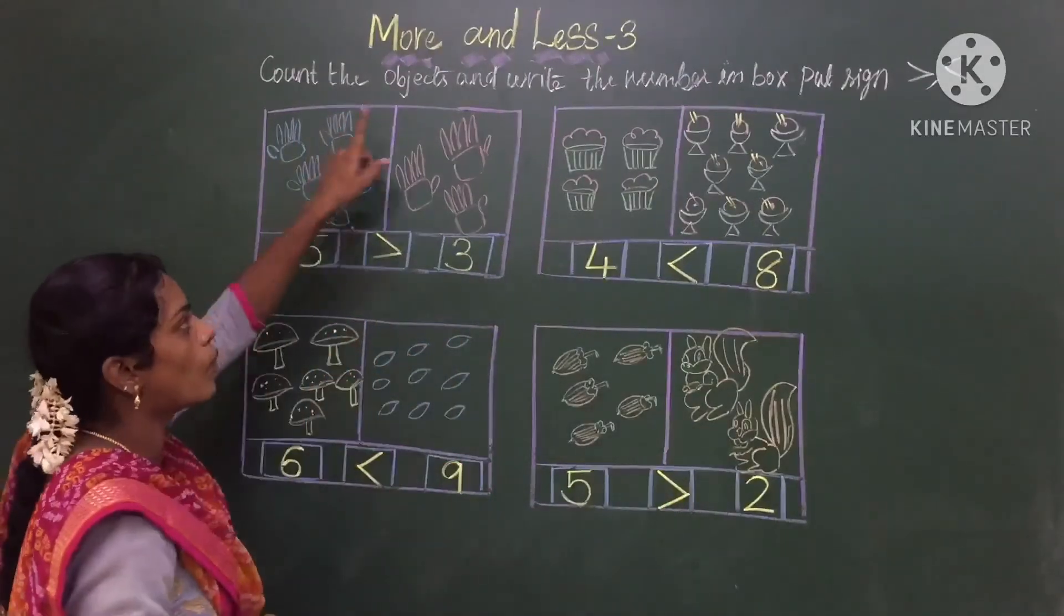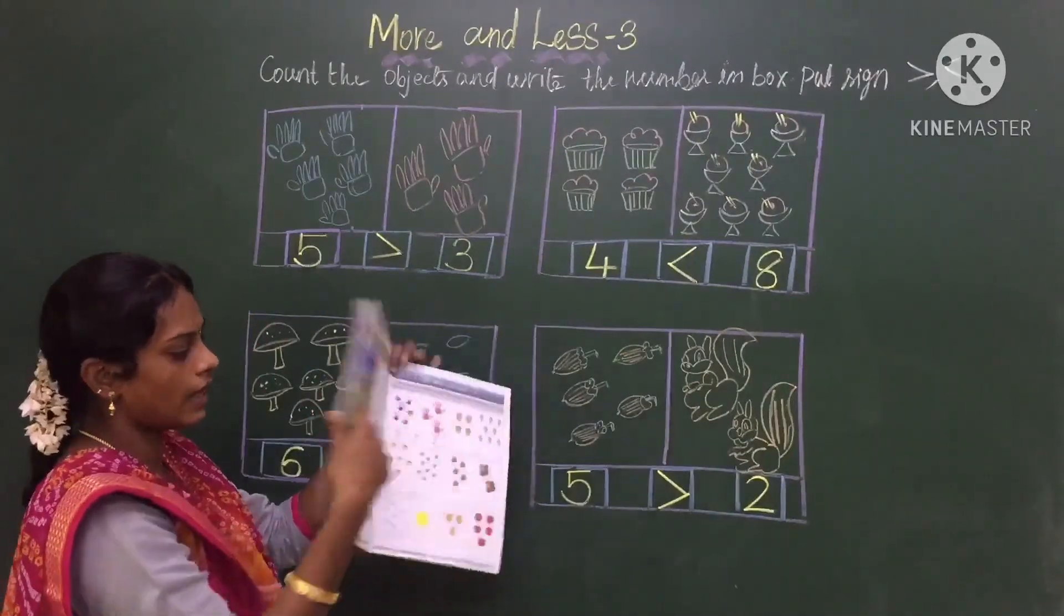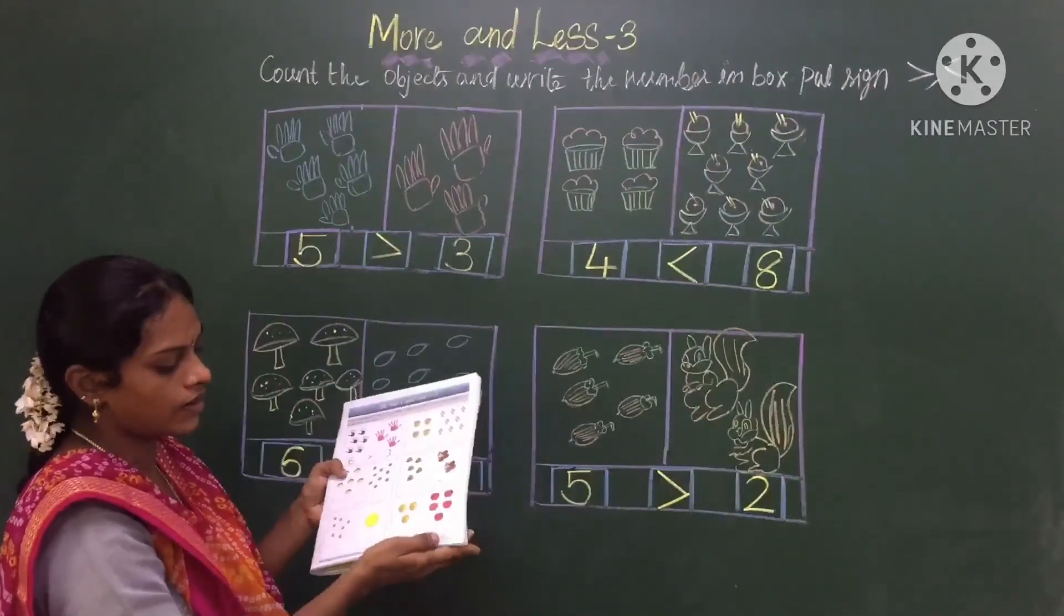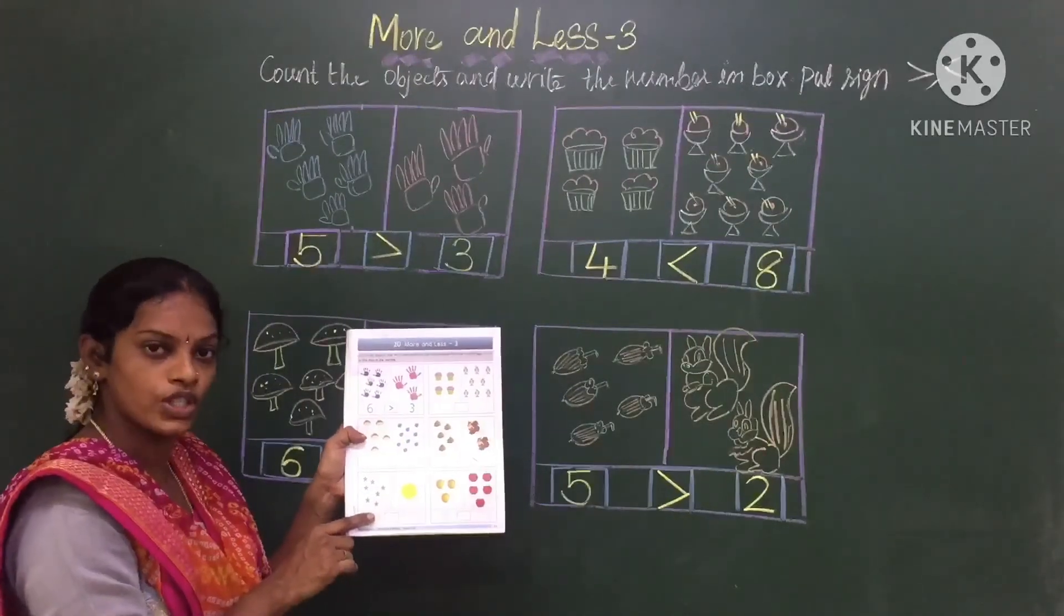In this way we have to do more and less number 3 in book, book 3, page number 25. Teacher has done 2 for you. Remaining 1 you have to do. Okay children.